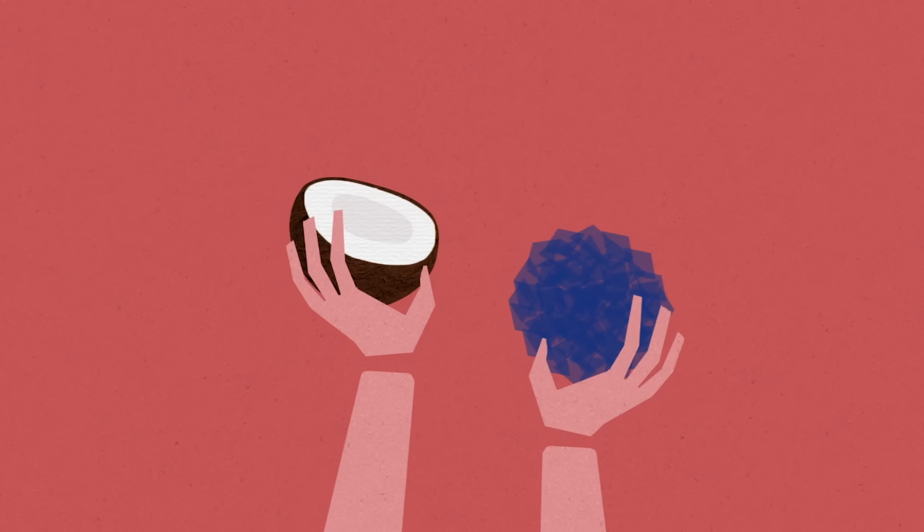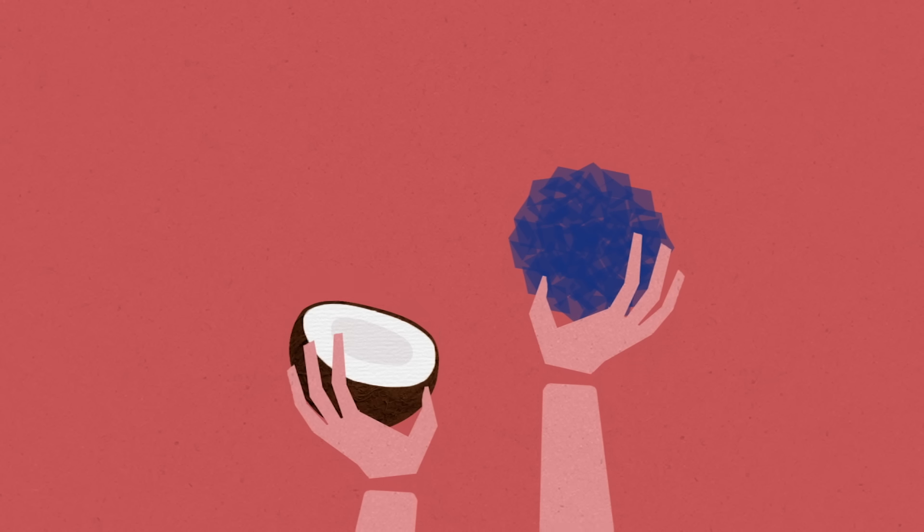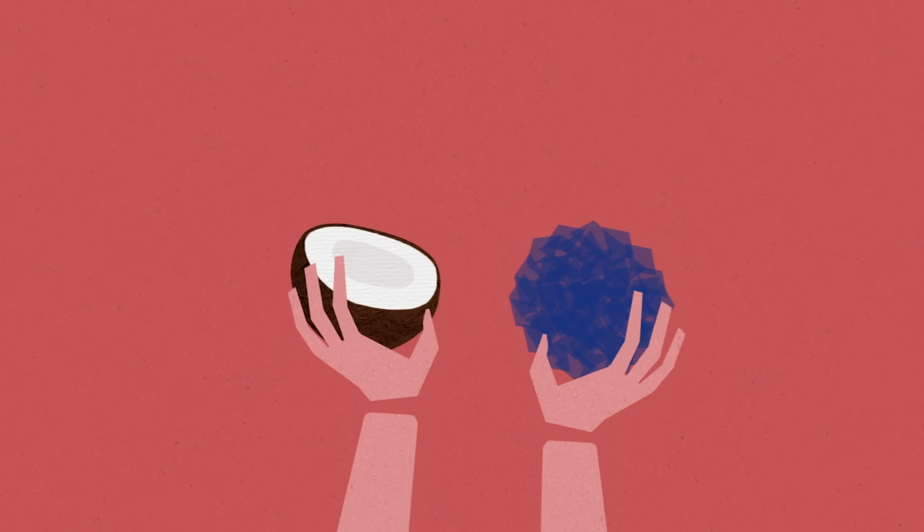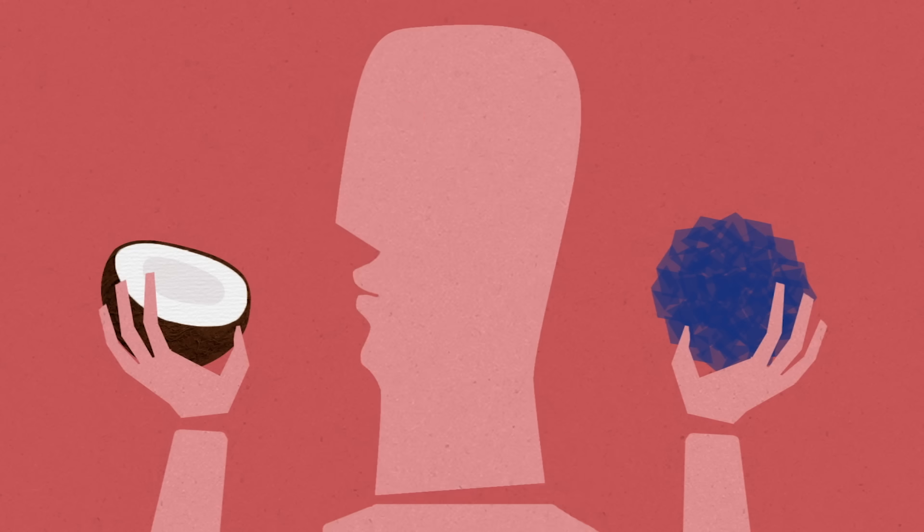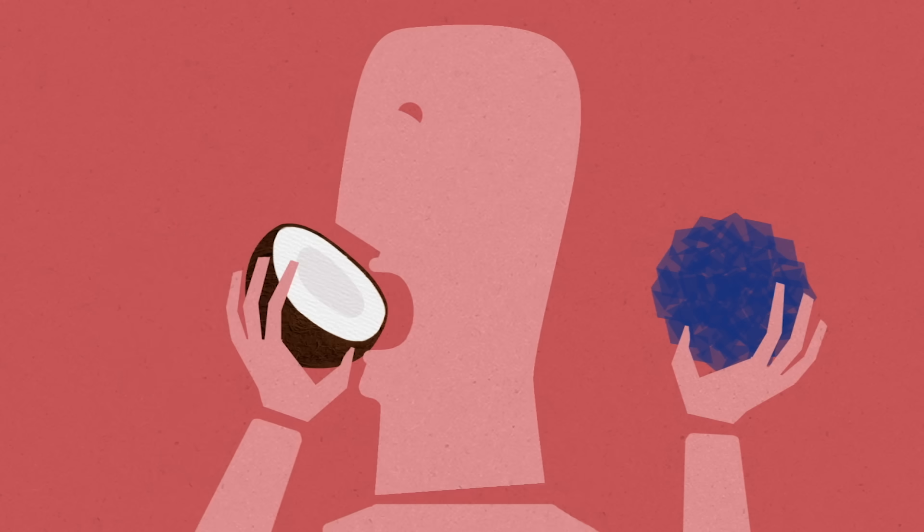The biggest kidney stone on record weighed more than a kilogram and was 17 centimeters in diameter. The patient didn't actually swallow a stone the size of a coconut.